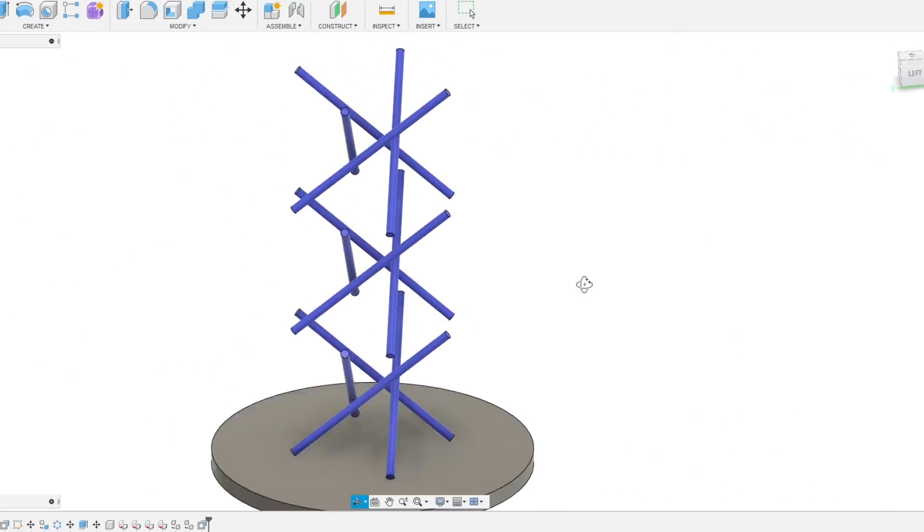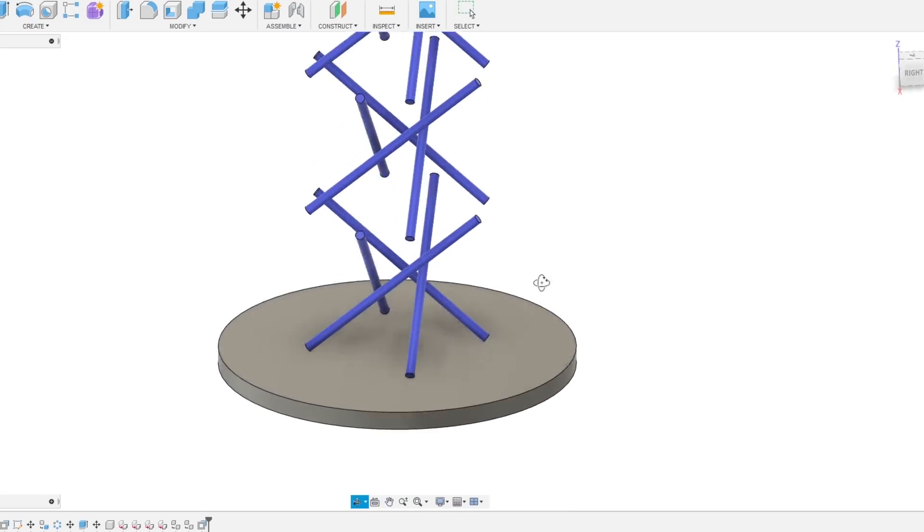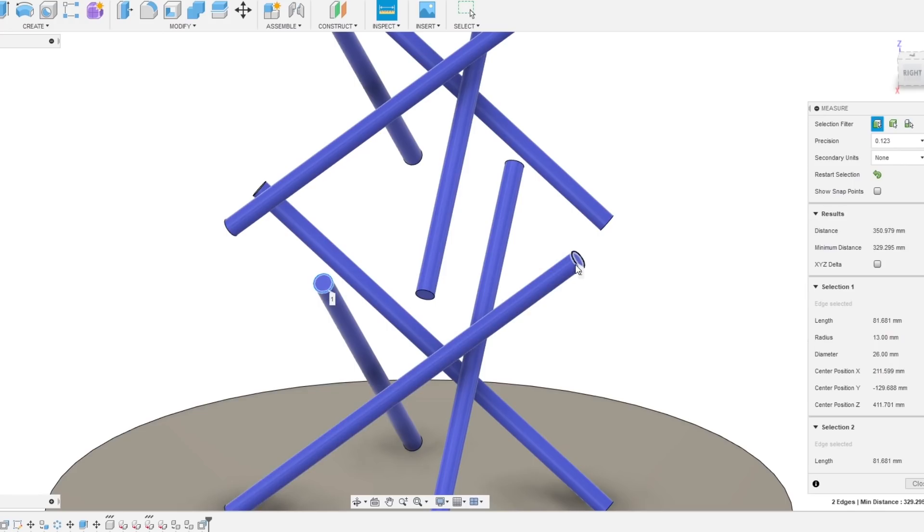I did a CAD diagram to work out roughly what the structure would look like, what angles the sticks would be at, and then I can measure the ends in CAD to find out roughly how long the strings need to be for each stage.